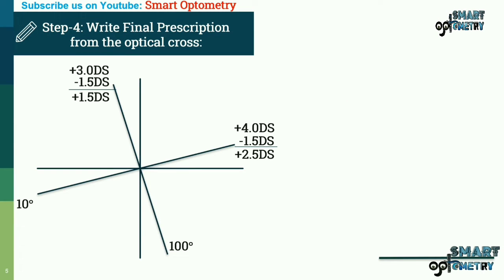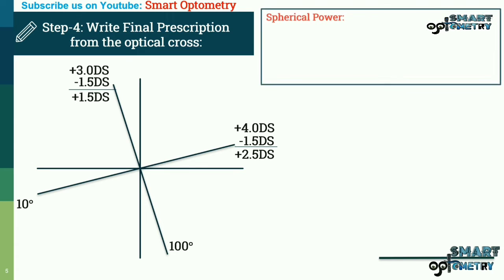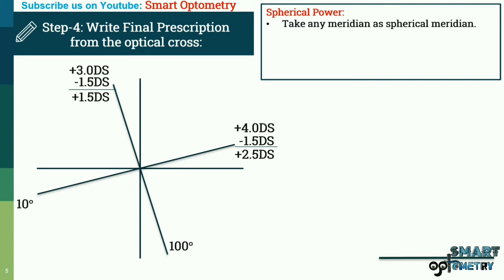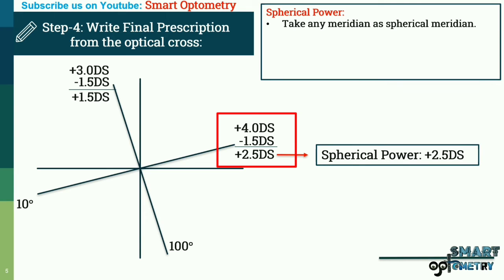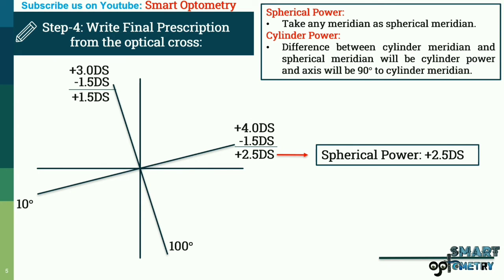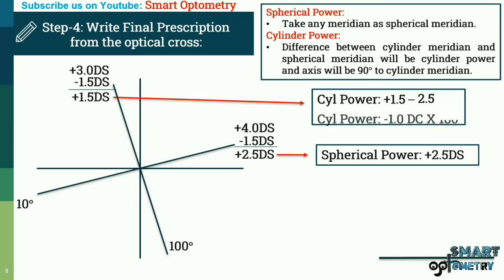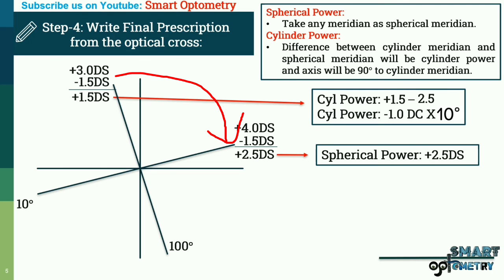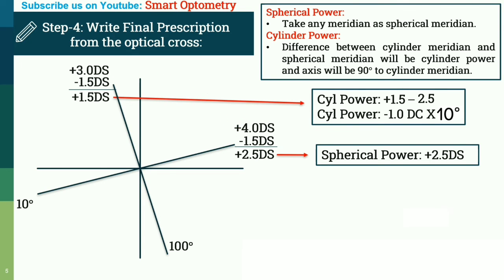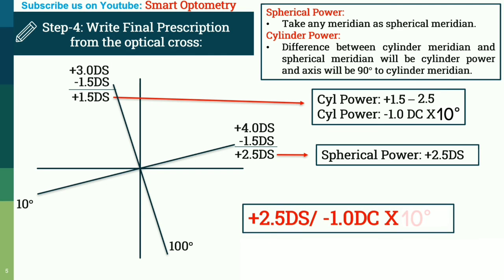Now our final step: write the final prescription from the optical cross. For spherical power, take any meridian as the spherical meridian. Let's consider this the spherical meridian, so our spherical power will be plus 2.5. For cylinder power, the difference between the cylinder meridian and spherical meridian gives the cylinder power, and the axis will be 90 degrees to the cylinder meridian. So the cylinder power will be plus 1.5 minus 2.5, or minus 1. The axis will be 90 degrees to the cylinder meridian, that is 10 degrees. So our final prescription will be plus 2.5 DS / minus 1 DC × 10°.